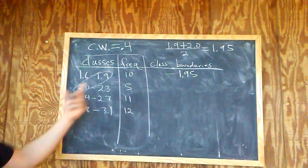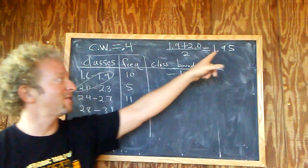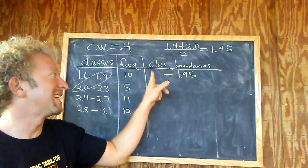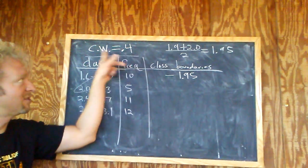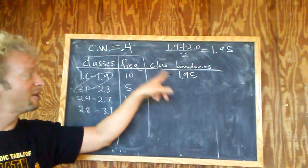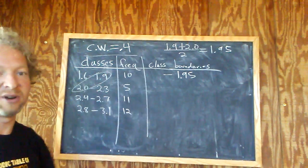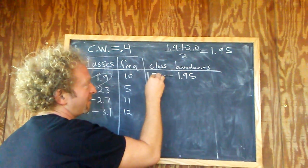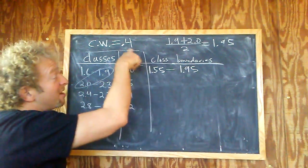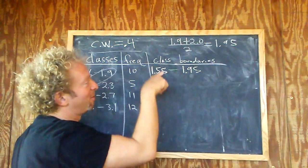So the first thing you do, again, is just take these two numbers, add them up, divide by 2, and you get that, and that goes there. To get this number, all you do is subtract the class width. So our class width is up here, CW class width, that's 0.4. So 1.95 minus 0.4. That's going to be 1.55. We just take this, subtract this. So 1.95 minus 0.4 is 1.55.